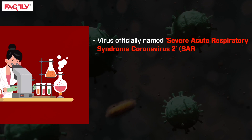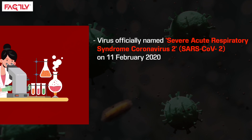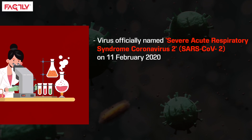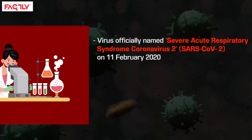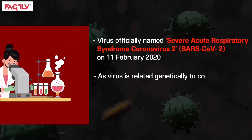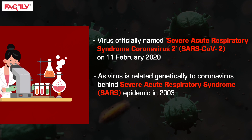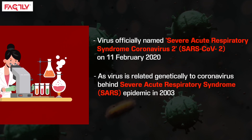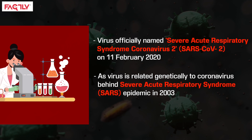This enables scientists to develop medicines and vaccines for that particular virus and the disease caused by it. The novel coronavirus was officially named Severe Acute Respiratory Syndrome Coronavirus 2, or SARS-CoV-2, on 11 February 2020, as it is genetically related to the coronavirus behind the Severe Acute Respiratory Syndrome epidemic in 2003.